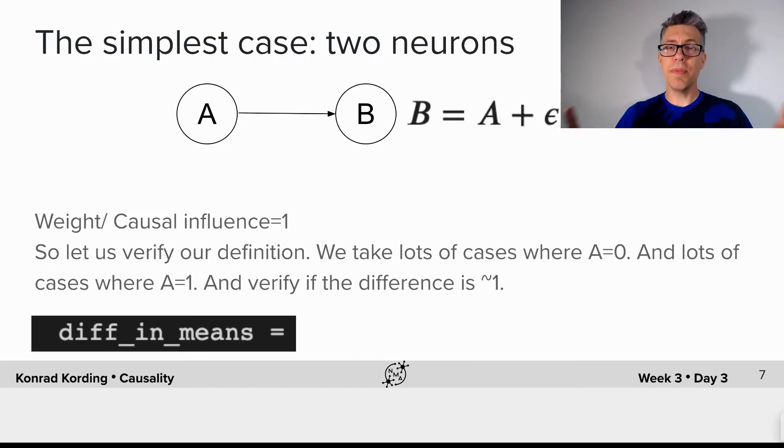So, the simplest case where we can see that is this case. We have two neurons A and B. What does B do? Well, B is simply A plus some noise, where we draw epsilon from some Gaussian distribution and otherwise it has a weight of 1 between that. So, the weight or the causal influence is 1 in that case.